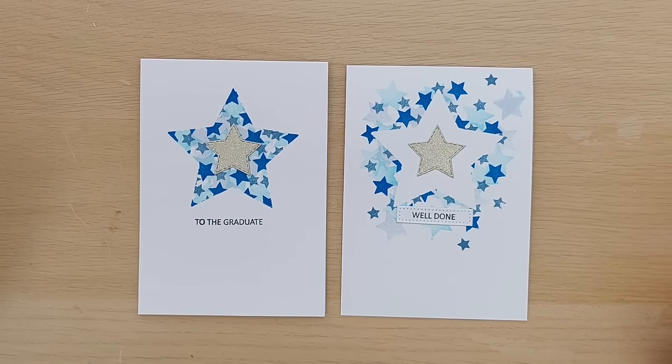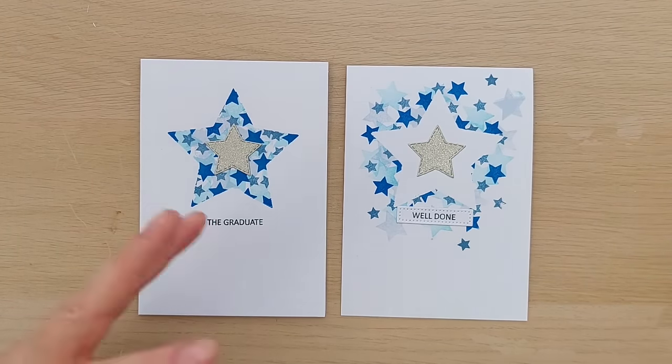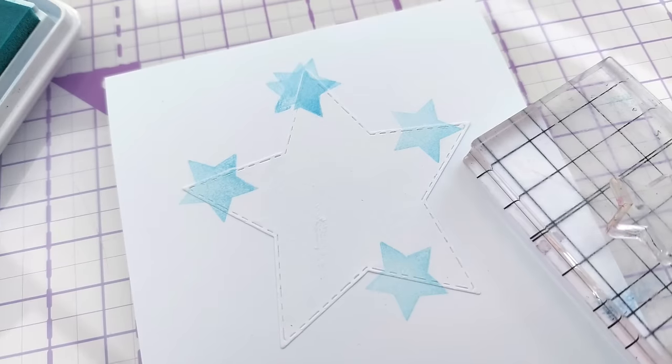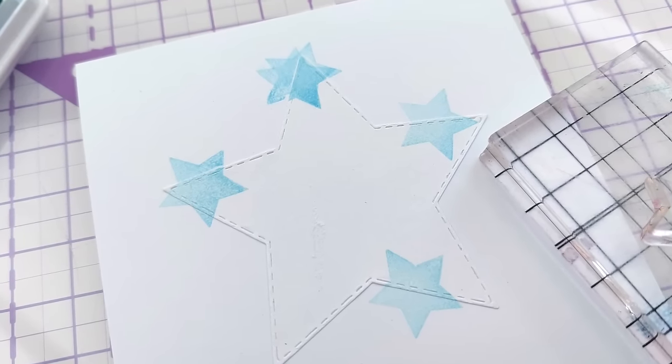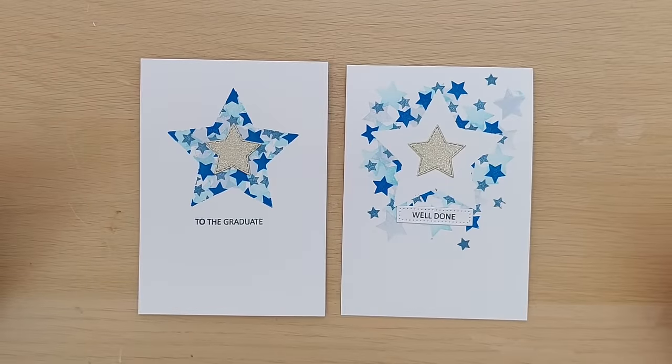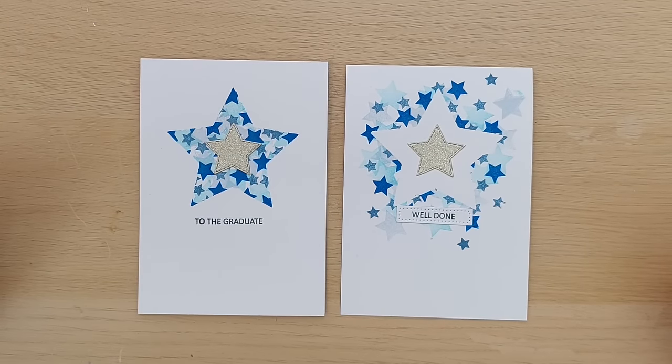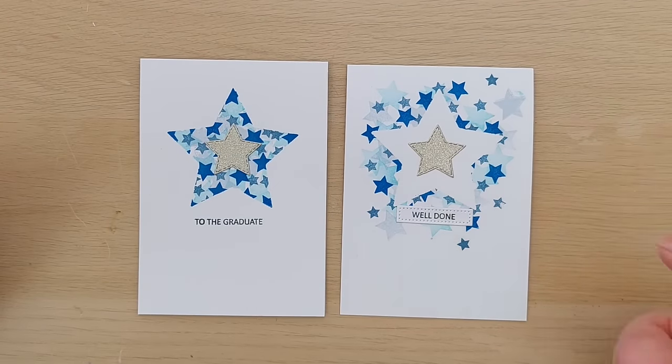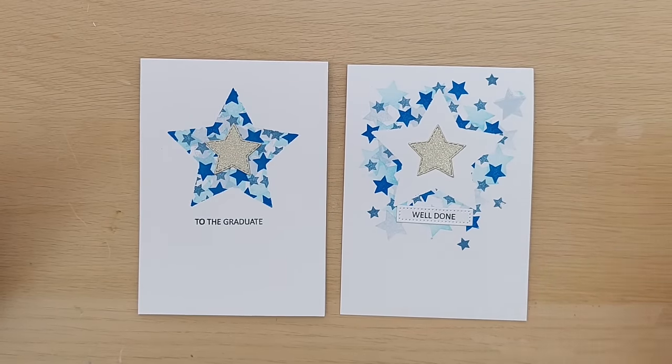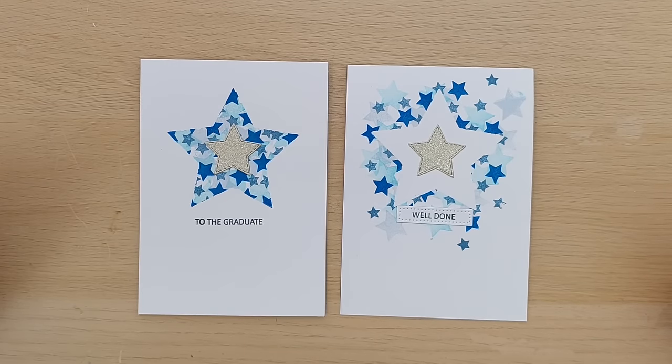And because I die cut a star from masking paper I had the star die cut as well, so I stuck that on this card and then stamped all the way around the outside with those star stamps and blue inks. Again I added a gold glitter star in the middle and a well done, so that's a congratulations card.